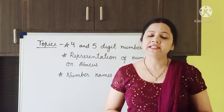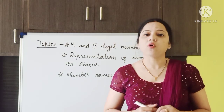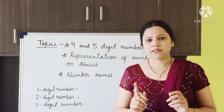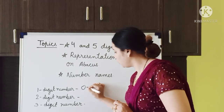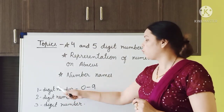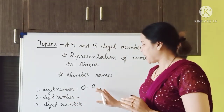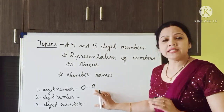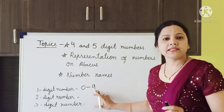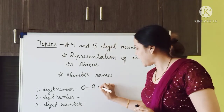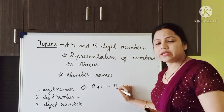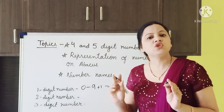Before starting 4 and 5 digit numbers, I want to give you a quick recap on 1, 2 and 3 digit numbers. Any number which has only 1 digit is called a 1 digit number — it is from 0 to 9. And 9 is the largest 1 digit number. As soon as we add 1 to the largest 1 digit number, it becomes 10, which is a 2 digit number, and 10 is the smallest 2 digit number.